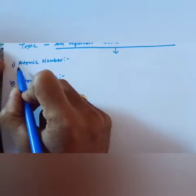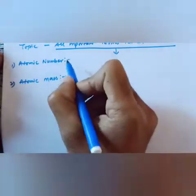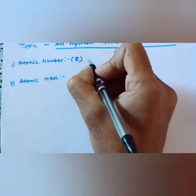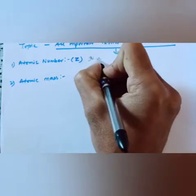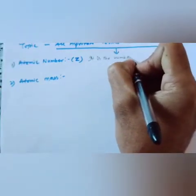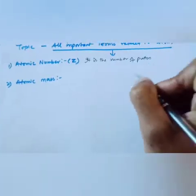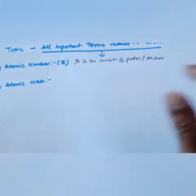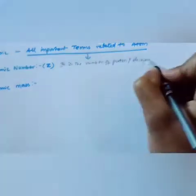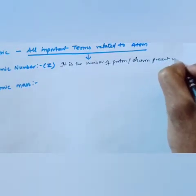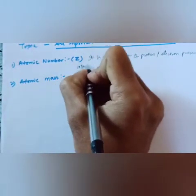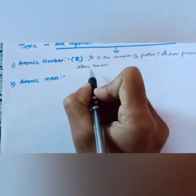The first definition related to atom is atomic number, denoted with capital Z. Atomic number is the number of protons — and as you know, electrons and protons are always equal in number — so it is the number of protons or electrons present in an atom that is called its atomic number.